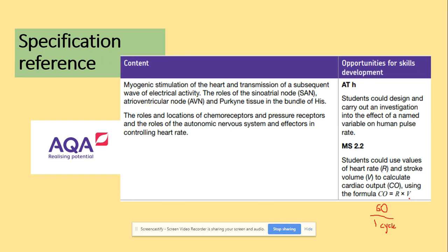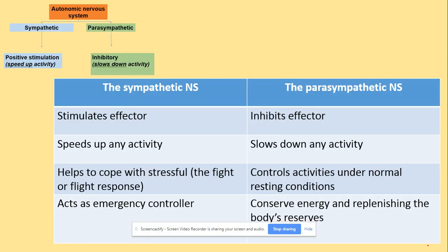In terms of the volume, they could give it to you in a table or on a graph. From the graph, the highest volume — for example, 120 — minus the lowest volume, let's say 40, gives you the stroke volume. So the stroke volume is the highest volume from the table or graph minus the lowest. In this situation, we do 120 minus 40. That's a really easy way of remembering how to work out the cardiac output.